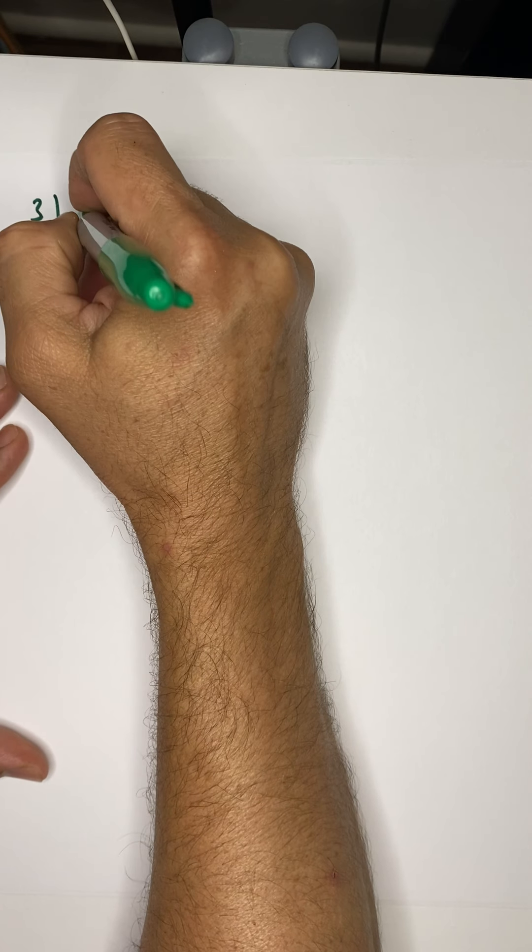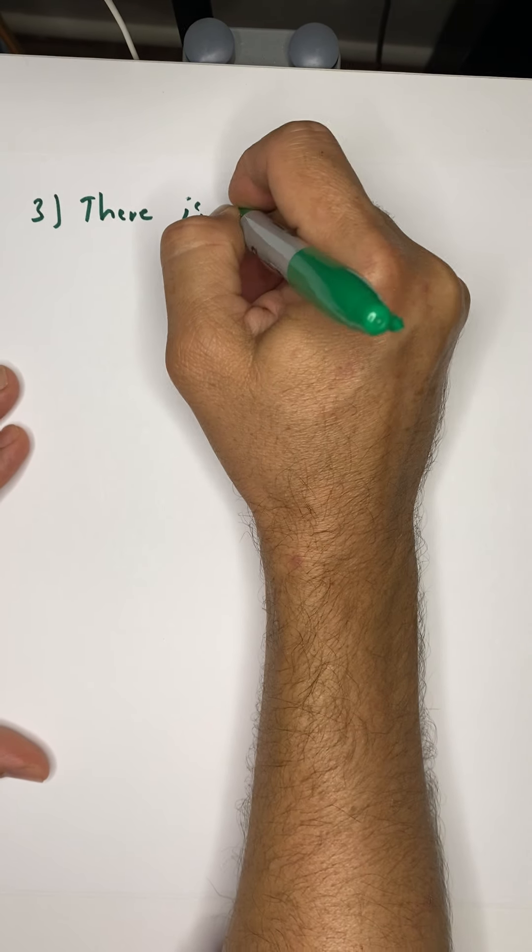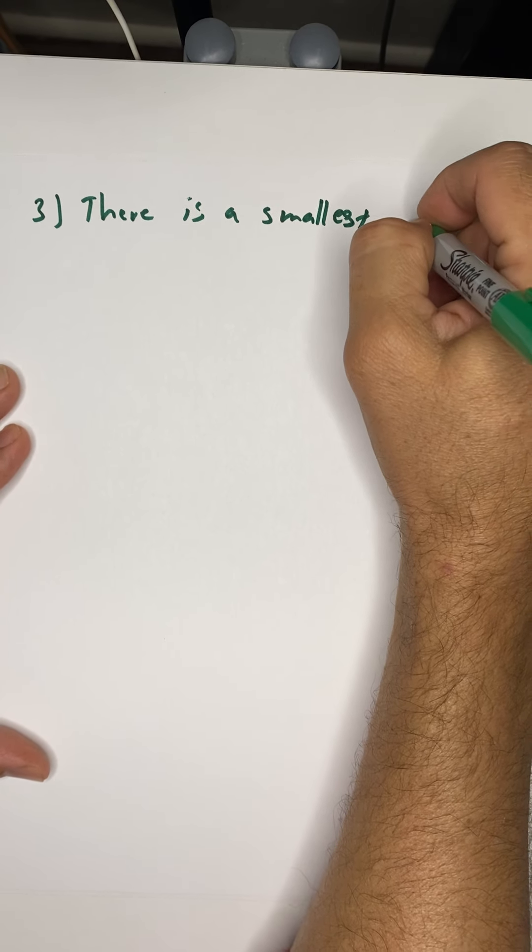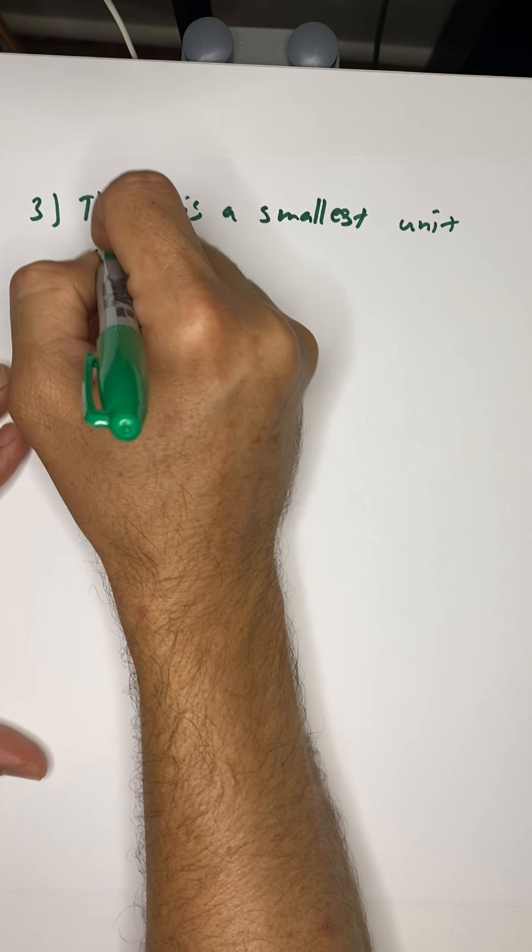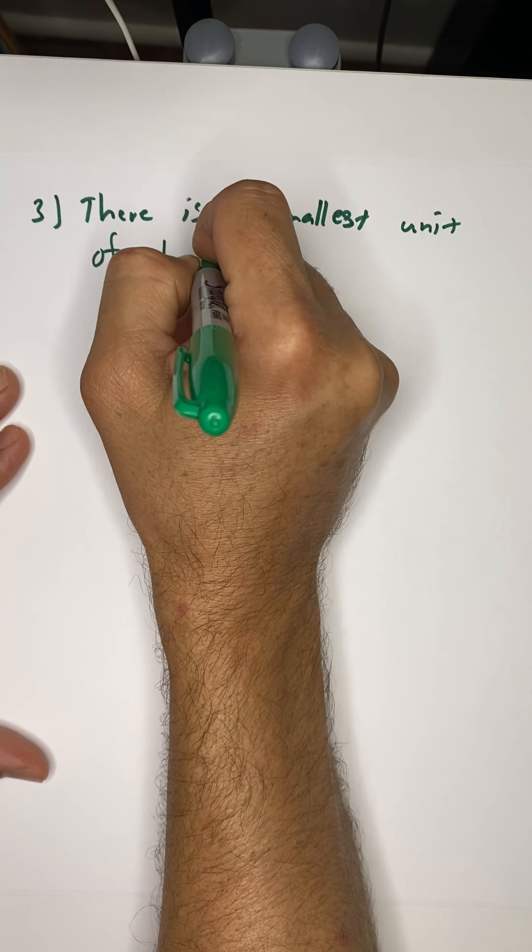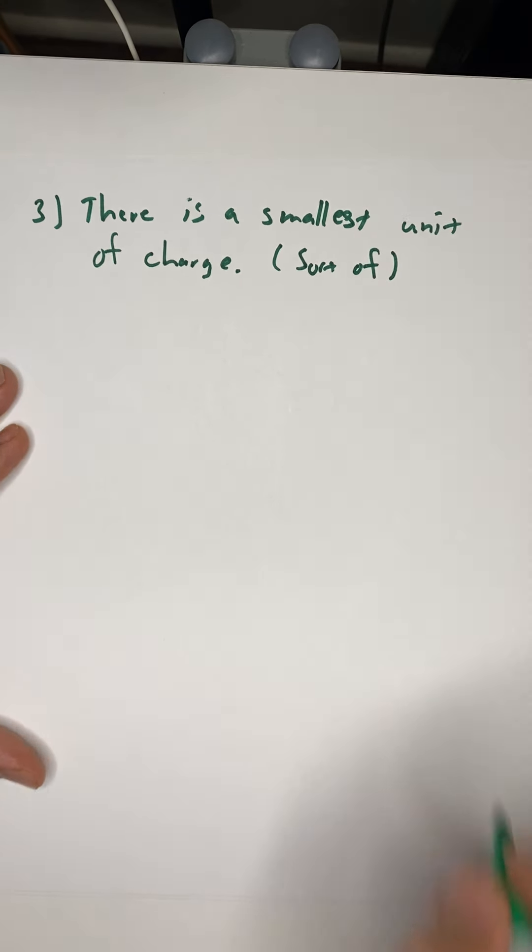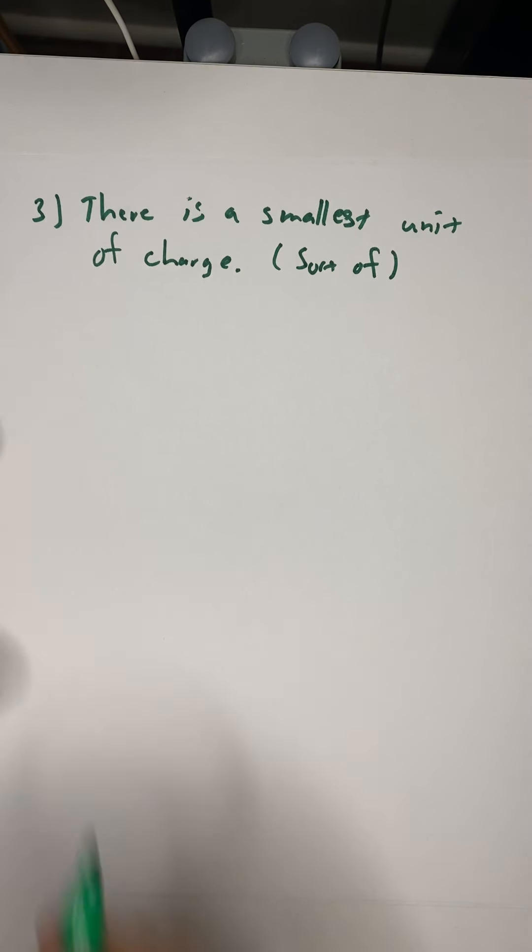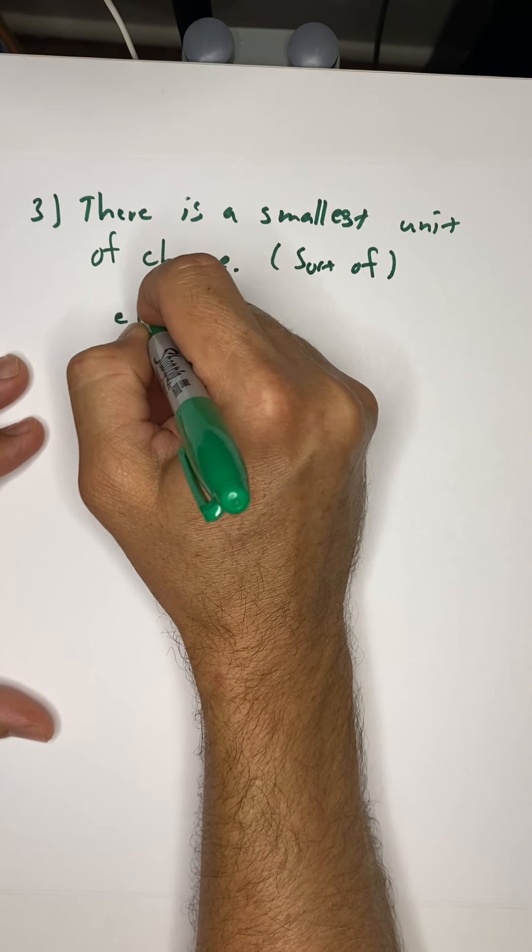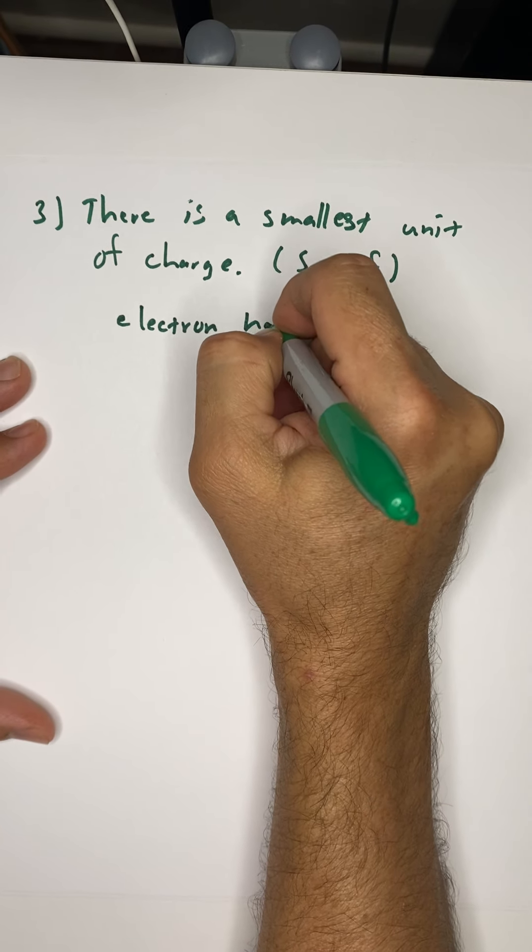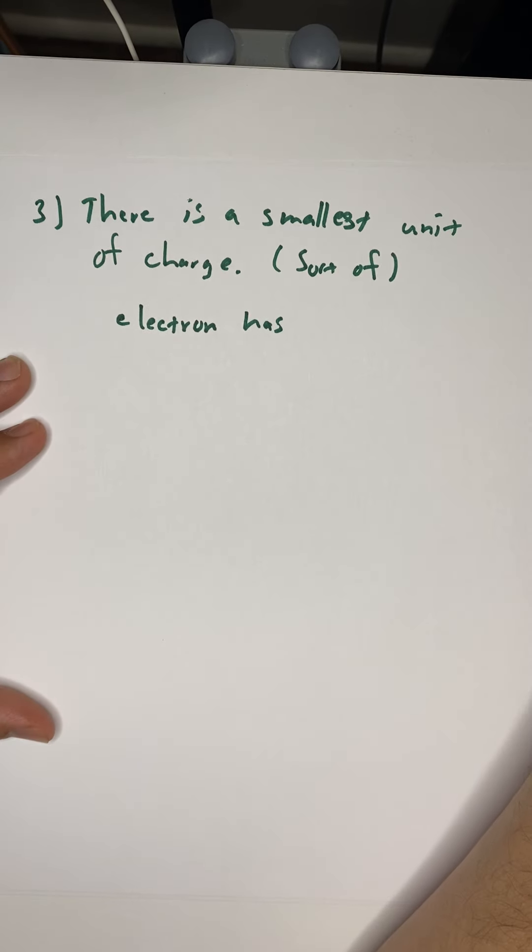We know that number three, there is a smallest unit of charge. And I'm going to put in parentheses, sort of. As it turns out, there is a charge that is carried by, I should say, an electron. I'm going to assume that you know what an electron is, or at least have a basic understanding. Because I'm going to assume at some point in your life you've been through some sort of chemistry class, either in high school or in college.